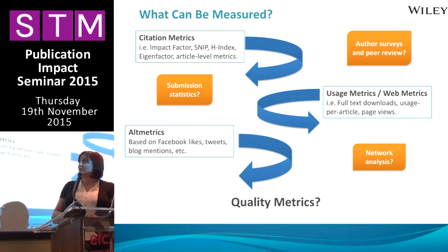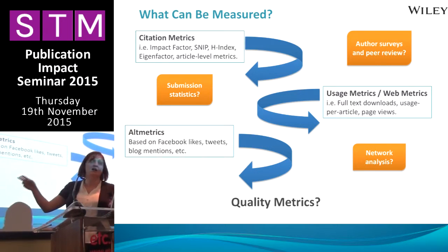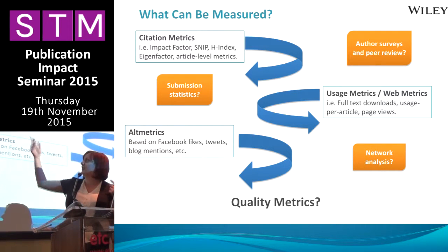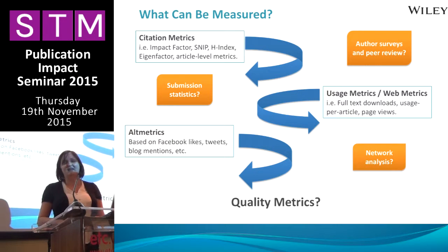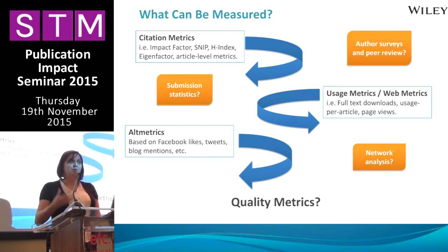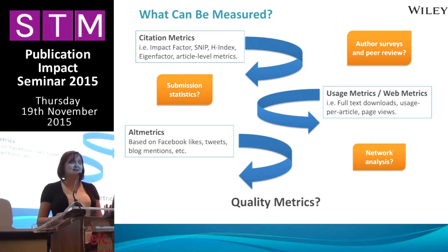So I just want to leave you with this thought: there are lots of different things we can measure — citation metrics, usage metrics, altmetrics, author surveys, peer review, submission statistics, network analysis. But the real take-home message is that there are all sorts of metrics you can use. What stories do they tell? How do they help you understand the academic environment? It's always dangerous when you try to rank things by metrics. Metrics should always be used first and foremost to understand the community, not to try and limit them.